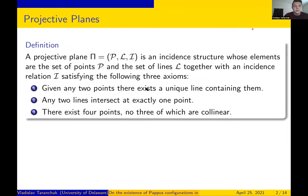So I'll be talking on the existence of Pappus configurations in projective planes. To start off we'll want to define what a projective plane is. A projective plane is an incidence structure of points and lines together with an incidence relation that satisfies the following three axioms. Given any two points there exists a unique line containing them. Any two lines intersect at exactly one point. There exist four points, no three of which are collinear.